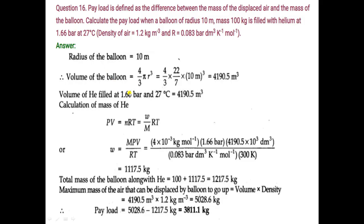Helium gas is filled in the balloon. Volume of helium gas filled at 1.66 bar and 27 degree Celsius is equal to 4190.5 m³ because this is the volume of the balloon. We want to find out the mass of helium gas inside the balloon. So here we will use the formula PV = nRT.